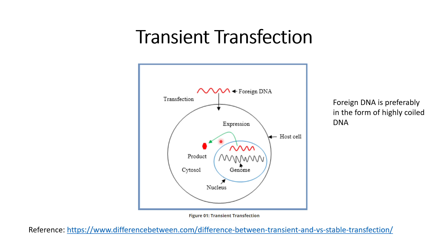For example, when the cell divides, if there are five or six plasmids that have entered into a cell, it might divide them among the different daughter cells. However, it is not essential that both of them will divide evenly. It is possible that all of them might go with one cell, or there could be an even distribution of the foreign DNA.